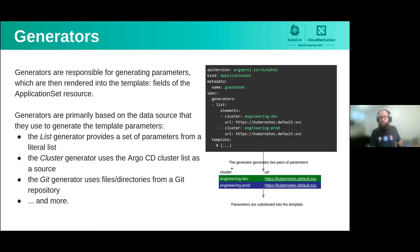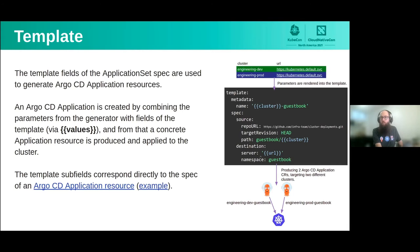Looking at the data flow diagram: the list generator produces a set of parameters — in this case a 'cluster' field and a 'URL' field, with rows for each cluster to deploy to. Those parameters flow into the template, the keys are replaced, and for each row you get a corresponding application. For the engineering dev cluster, that's one Argo CD application deploying to the dev cluster; one application deploying to the prod cluster — corresponding to each row. Then it's up to Argo CD to look at those application resources and do the deployments to Kubernetes.